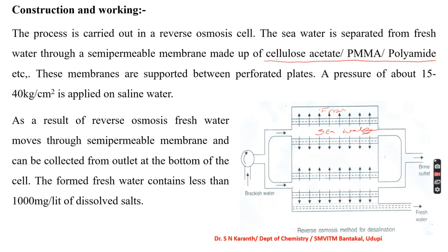The second method is multi-stage flash distillation. In this method, saline water is introduced into a flash chamber where the pressure is maintained below the vapor pressure of the saline water. As a result, the water evaporates while the salts, being non-volatile, remain behind. The steam is then condensed to produce fresh water. This process is repeated in multiple stages to obtain pure water.